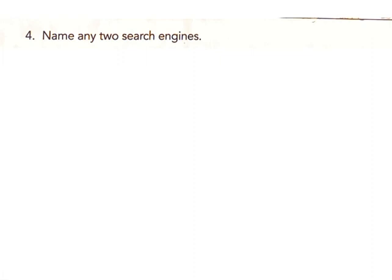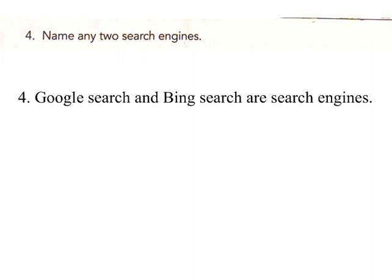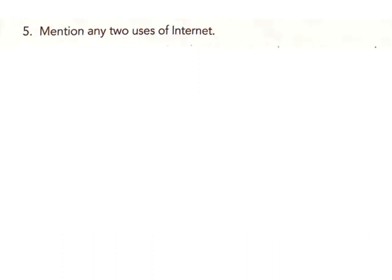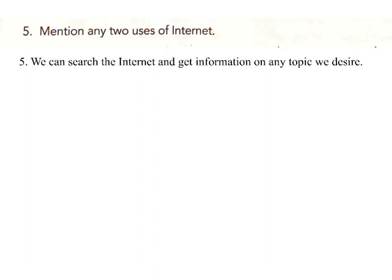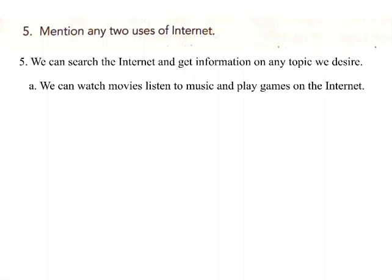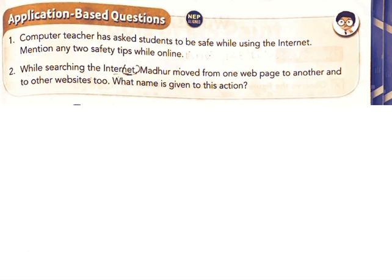Question 4: Name any two search engines. Answer: Google Search and Bing Search are search engines. Question 5: Mention any two uses of the internet. Answer: A. We can search the internet and get information on any topic we desire. B. We can watch movies, listen to music and play games on the internet. C. We can buy things on the internet.